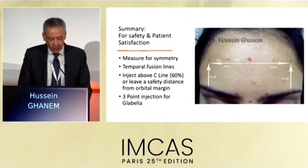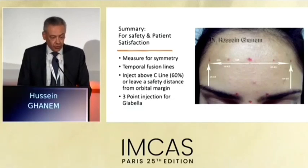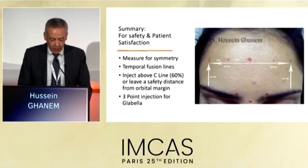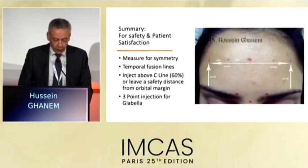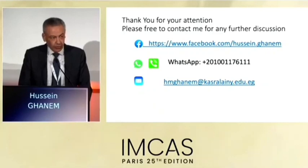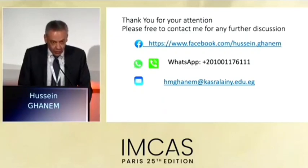To summarize: I measure for symmetry as shown in our geometric technique publication, injecting from temporal fusion line to temporal fusion line to get symmetrical relaxation of the frontalis muscle. We inject above the C-line to avoid ptosis, and we use the three-point injection technique for the glabella, adding two additional points at the tail of the corrugator if needed. Thank you — for any questions or discussions, I would be delighted if you contact me.